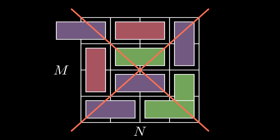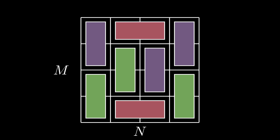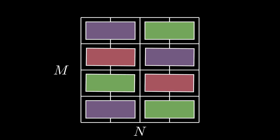More formally, given an m by n grid, how many possible ways can you arrange or tile 2 by 1 dominoes on the grid? As with a lot of math problems, let's first think of a simpler case and then build up to the actual problem.